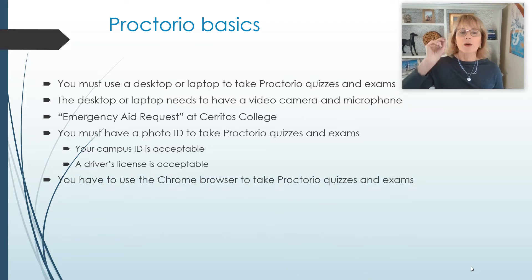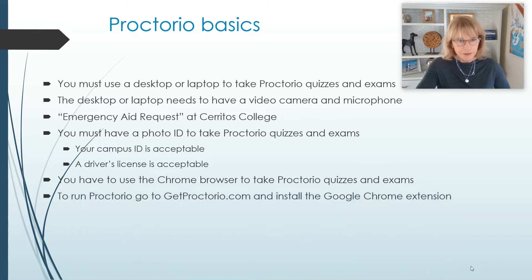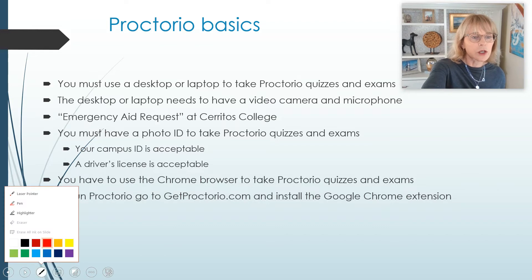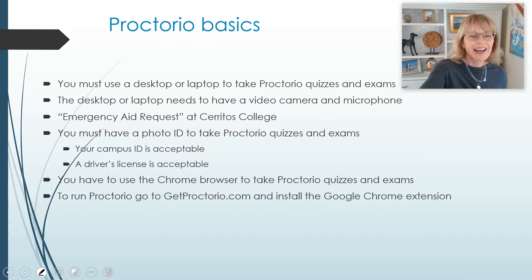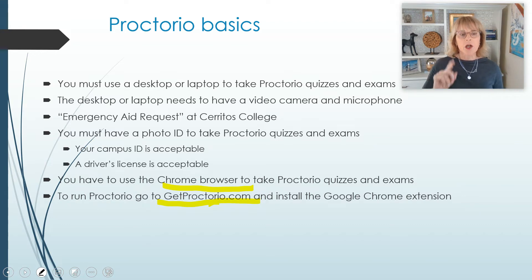You have to use the Chrome browser — this is important, it has to be Chrome. Proctorio is something that you add on to Chrome, so you have to start out using the Chrome browser. To run Proctorio, just go to getproctorio.com and install the Google Chrome extension. It is really good policy that an hour before you're planning to take your exam, you go to getproctorio.com to make sure that you're using Chrome and that it is properly installed.